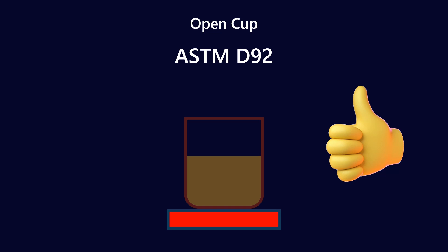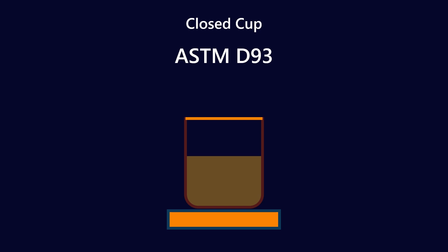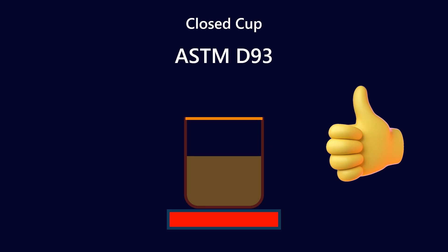The typical closed cup test is ASTM D93 — a very similar setup, except this time there's a lid on top, so it's a sealed vessel. Again, we increase the temperature and try to put a spark into the system. If nothing happens, we increase the temperature again, and if we get a flame, that's the flashpoint. The measured flashpoint here will differ from the open cup version because it's a closed system — vapors aren't venting to atmosphere, so pressure is sealed in.